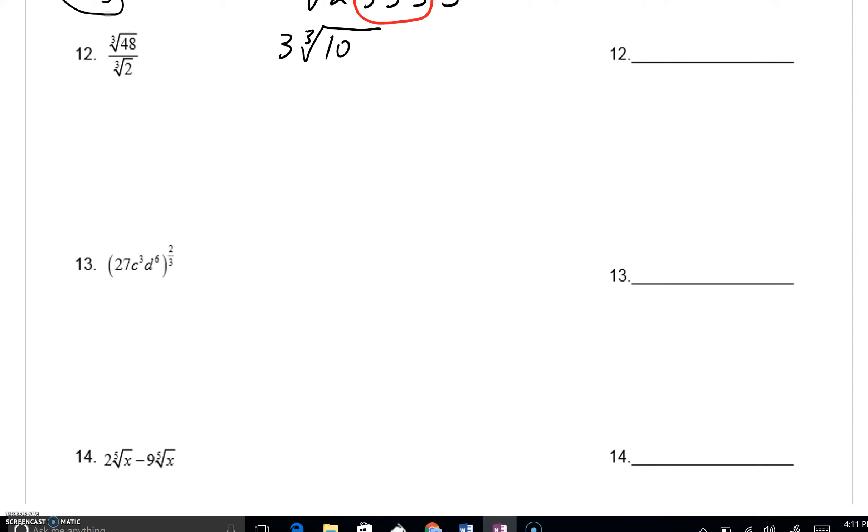For number 12, we've got the cube root of 48 divided by the cube root of 2. The best way to think of this is to write the cube root of 48 over 2 in one radical, writing that as a fraction. 48 divided by 2, by the way, I'm sure you can all know quickly, is 24.